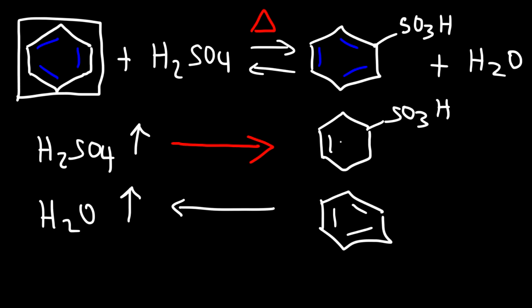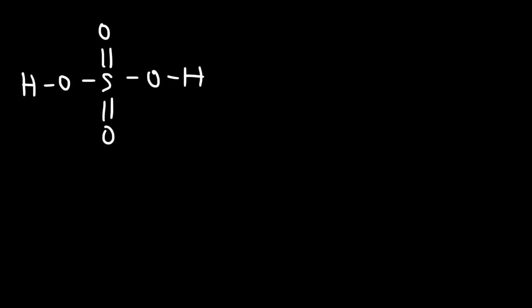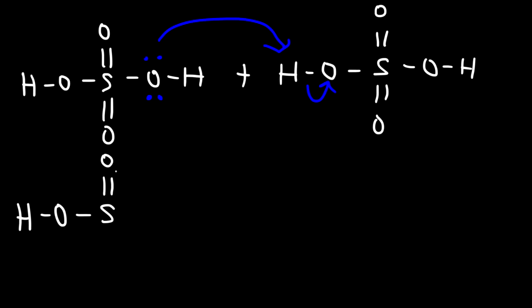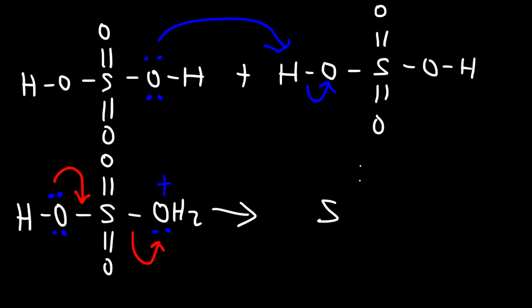Now let's go over the sulfonation mechanism of benzene. The first thing we need to do is generate the electrophile. To do that, we need to react sulfuric acid with itself. One of the sulfuric acid molecules will be protonated by the other — the OH group grabs a hydrogen, causing the oxygen-hydrogen bond to break. This turns the OH group from a bad leaving group to a good leaving group. Then that oxygen uses one of its lone pairs to form a pi bond, expelling water. And so now we have our electrophile.